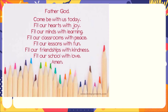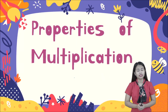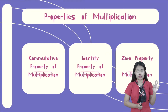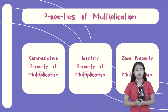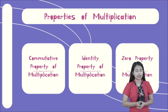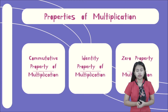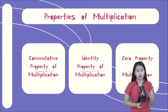This we pray in the mighty name of Jesus, amen. Our lesson for today is all about properties of multiplication. We have three properties: first is the commutative property of multiplication, next is the identity property of multiplication, and the last one is the zero property of multiplication. Let us talk about them one by one.